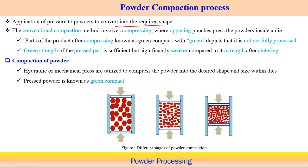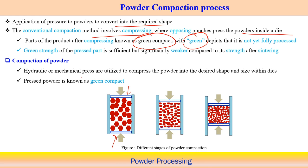In the conventional compaction method, opposing punches compress the powder inside the die. With application of the compressive load, particles come into closer contact. Parts produced after compressing are known as green compact — this terminology indicates it is not fully processed and there is possibility of further processing to improve strength of the component.